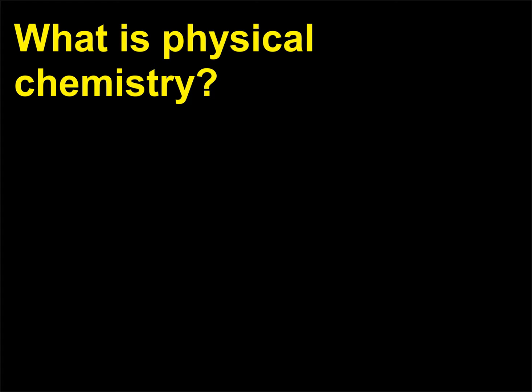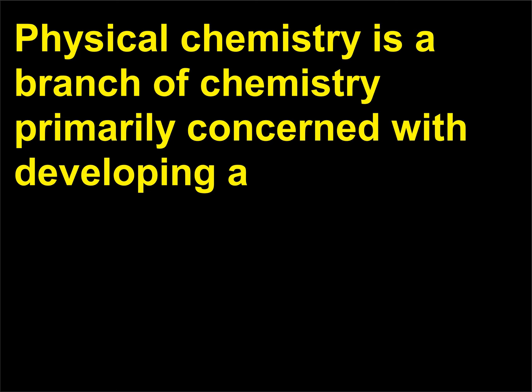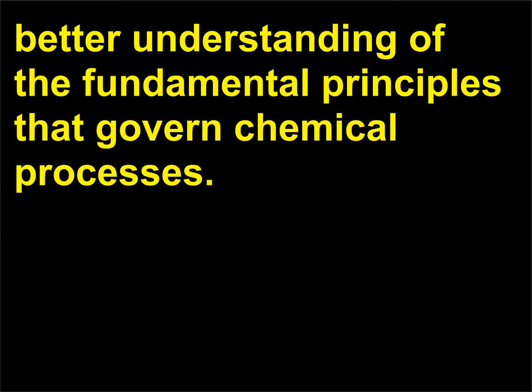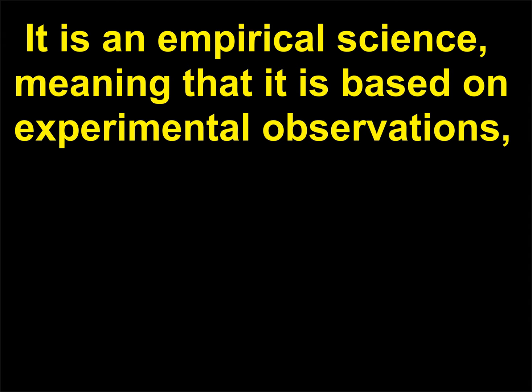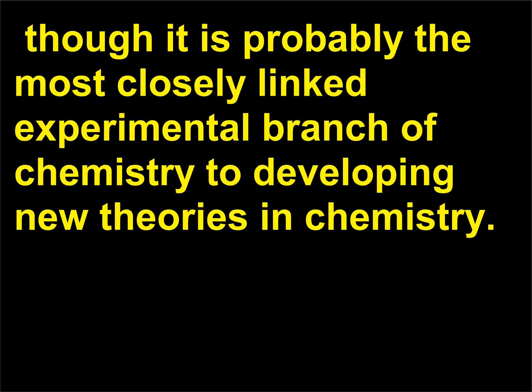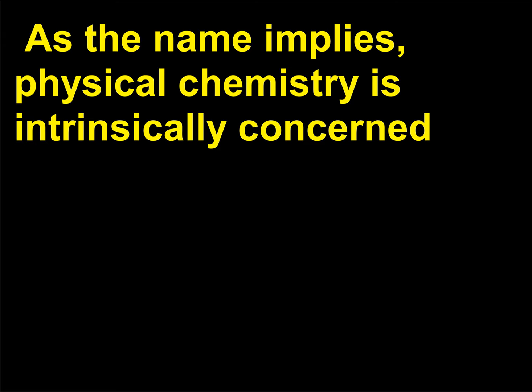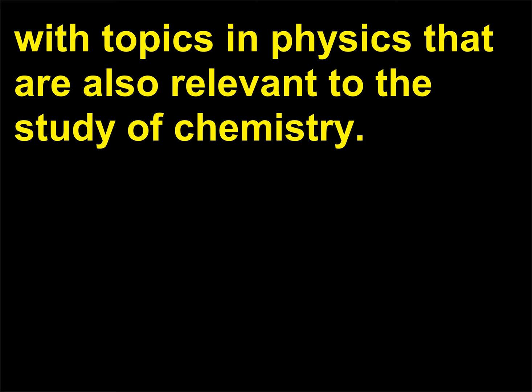What is physical chemistry? Physical chemistry is a branch of chemistry primarily concerned with developing a better understanding of the fundamental principles that govern chemical processes. It is an empirical science, meaning that it is based on experimental observations, though it is probably the most closely linked experimental branch of chemistry to developing new theories in chemistry. As the name implies, physical chemistry is intrinsically concerned with topics in physics that are also relevant to the study of chemistry.